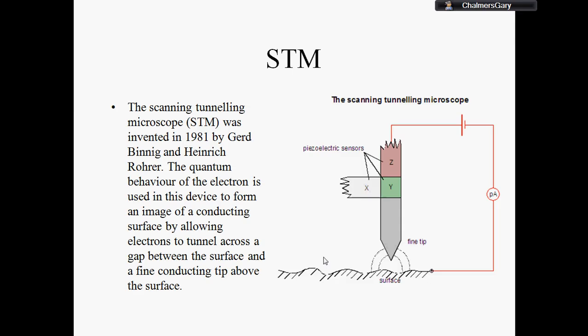So on the image you can see on the right there, that is a thin sample of a material and those are the atoms on the surface of it. So with the scanning tunneling microscope, you can actually see down to that resolution.